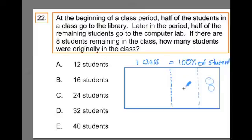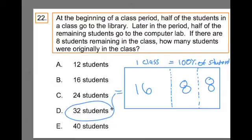This model drawing itself sort of helps me get to the fact that this is eight, so this must have been eight, so this must have been 16. So altogether, it all must have been 32. The model drawing helps me organize the work.